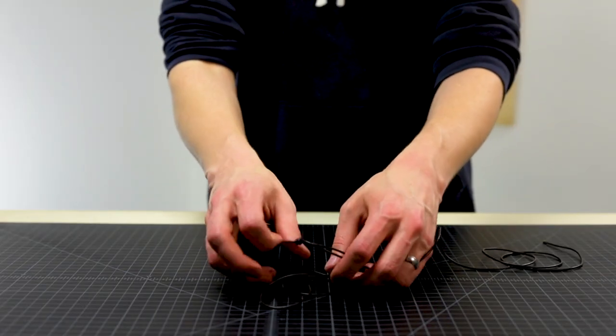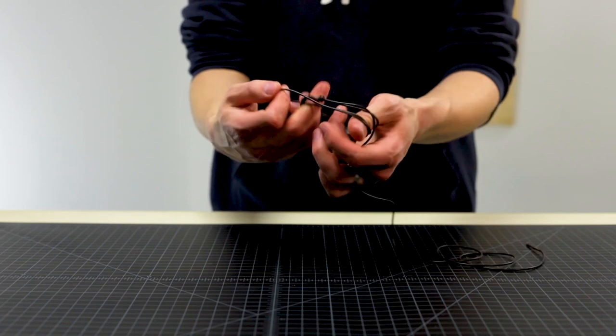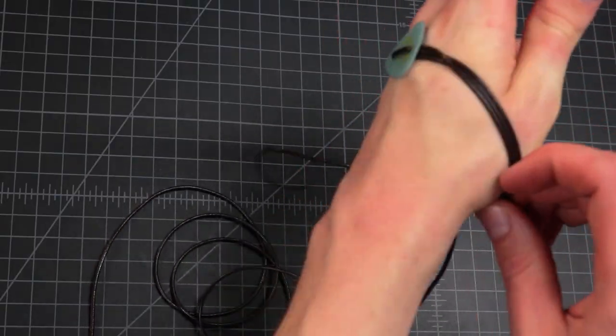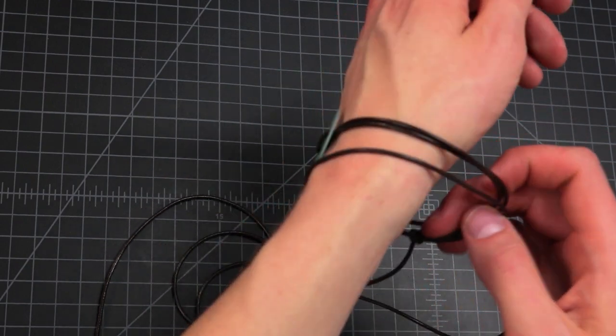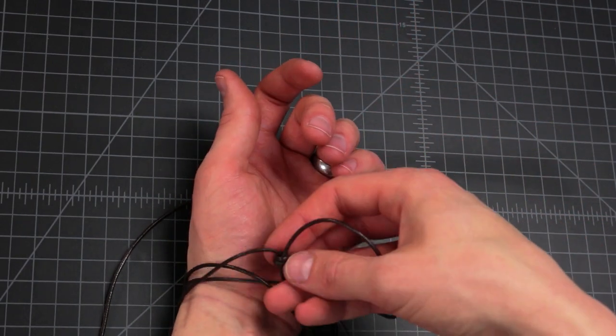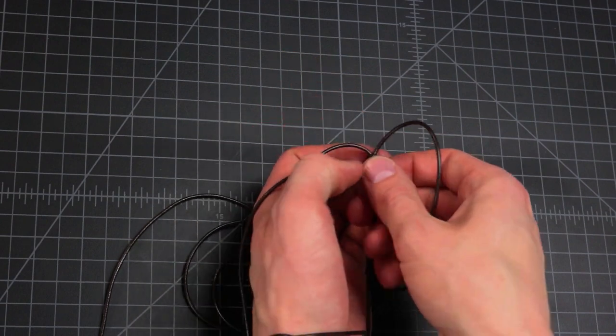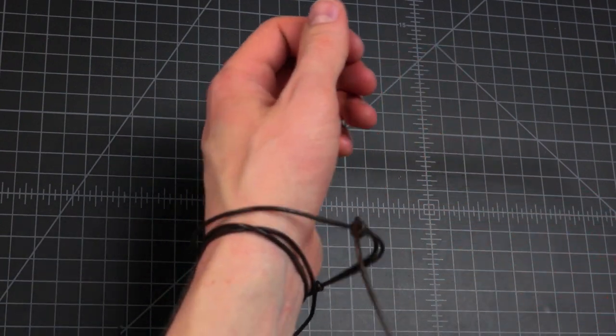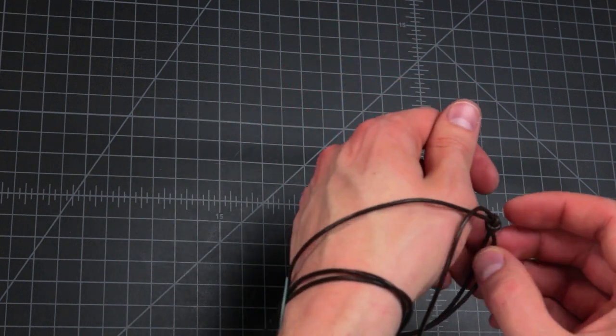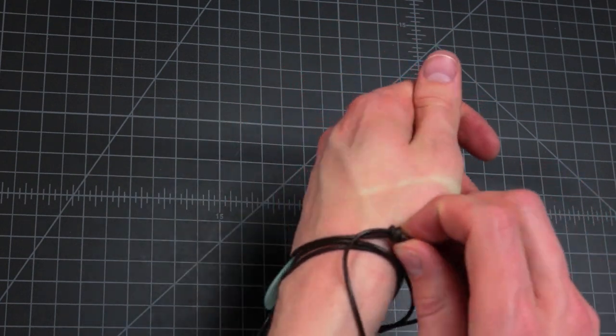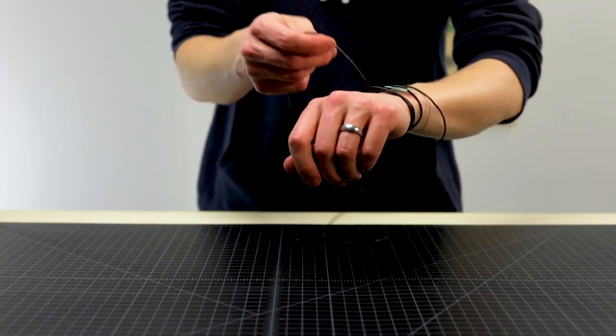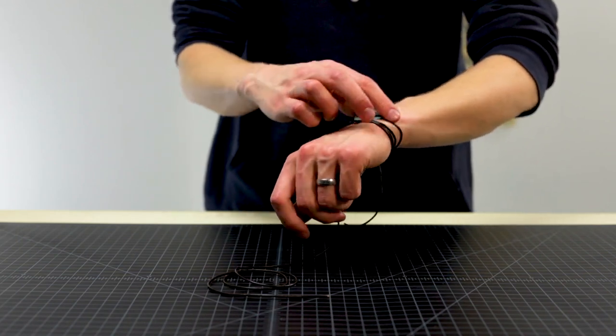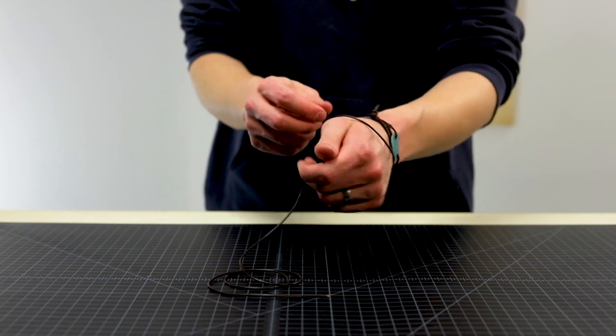Now go ahead and try it on your wrist again before you cut your ends, just to make sure that it fits. Put that guy around. You can cinch your bracelet down. It's okay if the knot goes all the way around to get the right size. So that's about what I want. I'm going to cut my cords right there.